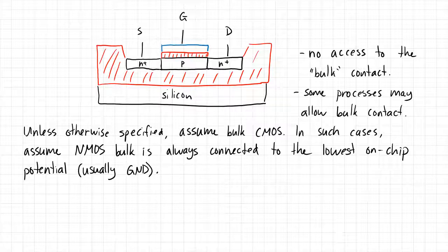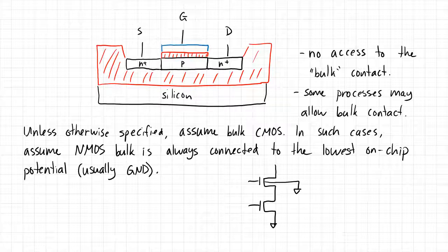Note this is different from discrete devices. Typically in prior classes you often assumed the source was connected to the bulk all the time, but that's not the case here. If we draw a stack of two NMOS devices in series, what we typically assume is that the bulk terminal of the top device is connected to ground. That does increase the complexity of the analysis, but this is realistic. For the bottom device, its source terminal is connected to the bulk terminal since its source is at ground.